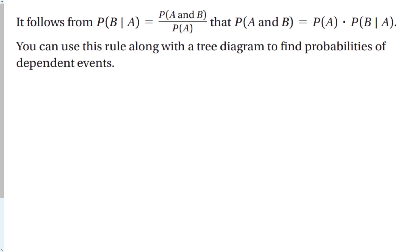It follows from that formula that the probability of A and B together equals P(A) times P(B|A) — we just multiply both sides by the probability of A to get this multiplication rule. We can use this rule along with a tree diagram to find probabilities of dependent events. The trick is making an accurate tree diagram.